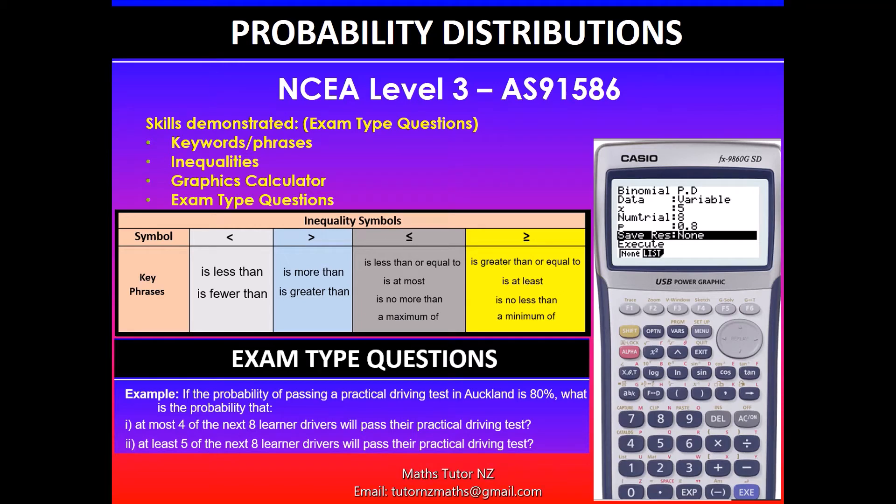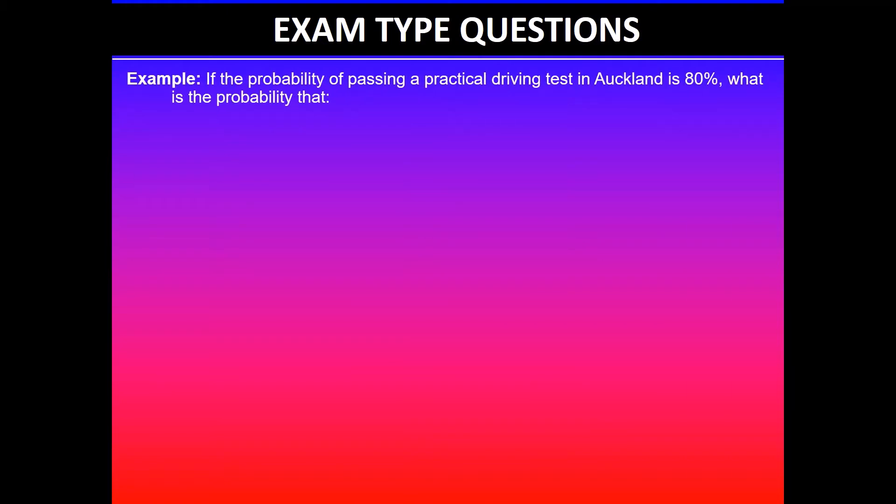Greetings everyone. In this video we'll be looking at NC Level 3 Probability Distributions Achievement Standard. In this example, if the probability of passing a practical driving test in Auckland is 80%, what is the probability that at most four of the next eight learner drivers will pass their driving test?